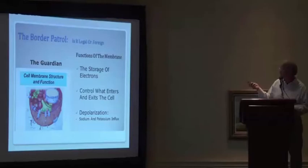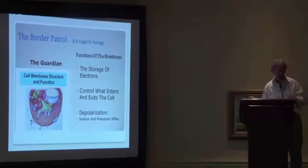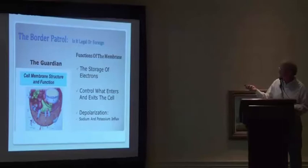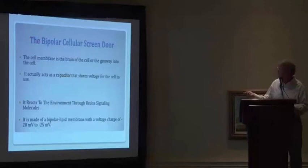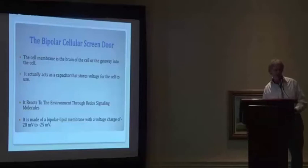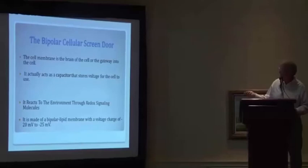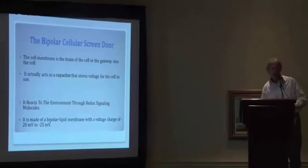Functions of the membrane. It stores electrons. It's the guardian of the cell. Now, it used to be said that the nucleus is the brain of the cell, but it has to get there first. So this is the gateway to the cell. It controls what enters and exits the cell. It has to do with depolarization, especially in nerve cells, sodium and potassium influx. So there it is. It's the gateway. It's a bipolar screen, cellular screen door. That's what it is. The cell membrane is the brain of the cell or the gateway into the cell. It actually acts as a capacitor. This is some of Tennant's work. It's a capacitor. It stores voltage for the cell to use. This is some amazing stuff here. It reacts to the environment through redox signaling molecules.